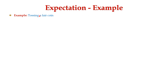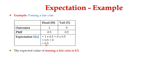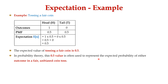Let's have an example for expectation by considering tossing a fair coin. The outcome of heads is 1, and the outcome of tails is 0. The probability mass function for heads is 0.5 and for tails is 0.5. So the expectation is 1 times 0.5 plus 0 times 0.5, which equals 0.5 plus 0, giving an expected value of 0.5. In probability theory, this 0.5 represents the expected probability of either outcome in a fair coin toss.